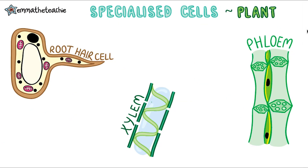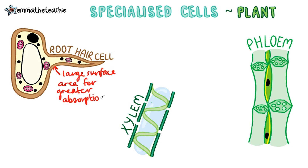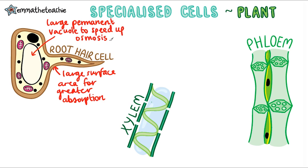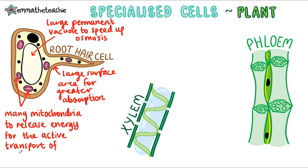Now we've got our specialized plant cells. We're starting with the root hair cell and its function is the absorption of water and mineral ions from the soil. What can you spot that would help it carry out this job? Well, first of all, this little protrusion provides a large surface area for the greater absorption of the water and mineral ions. We've also got a large permanent vacuole — this speeds up osmosis, which overall will bring more water into the cell. And again, we've got many mitochondria, which are going to be for the active transport of mineral ions. You'll learn a lot more about this in the active transport part of this topic later on.